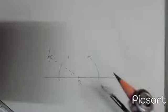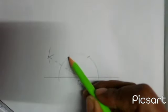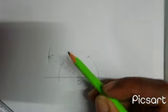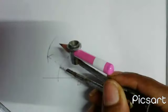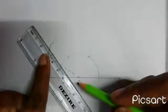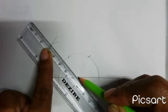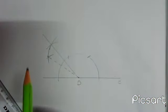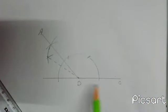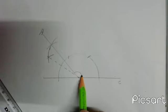Now if I bisect this area, then I will get a 135-degree angle. With the same measurement in my compass, I draw two arcs. ABC is 135 degrees.